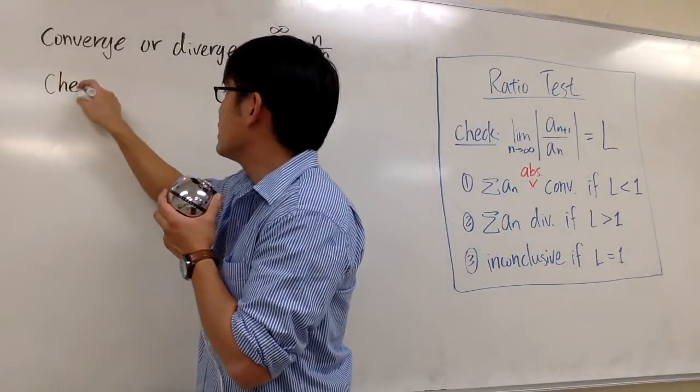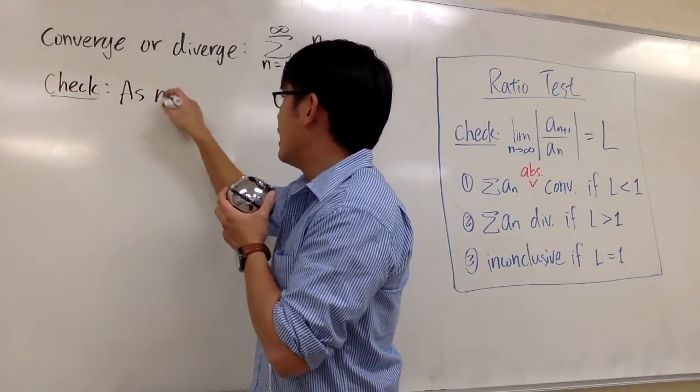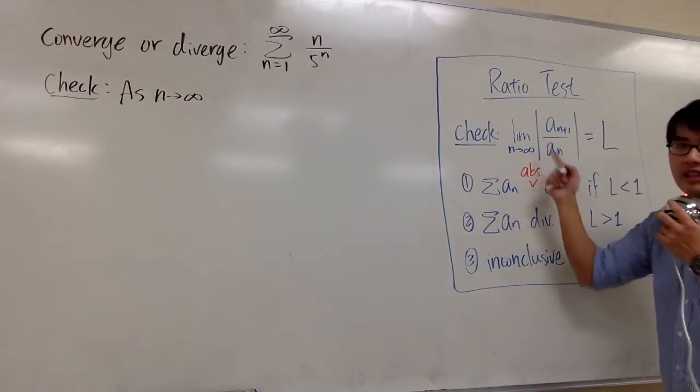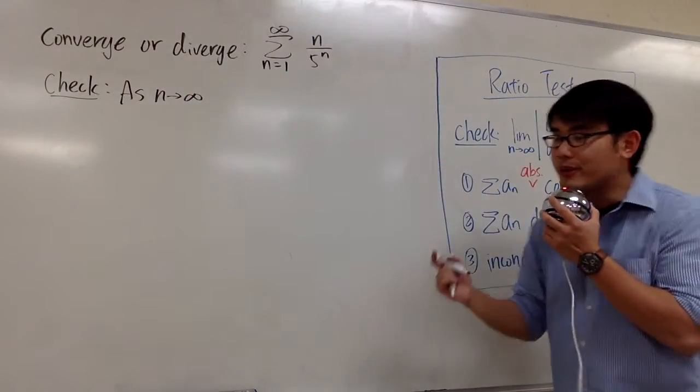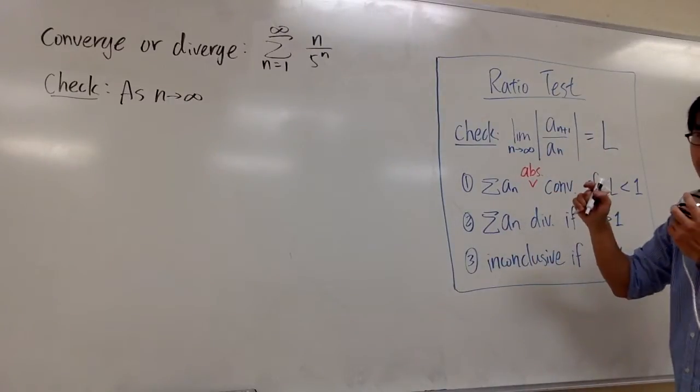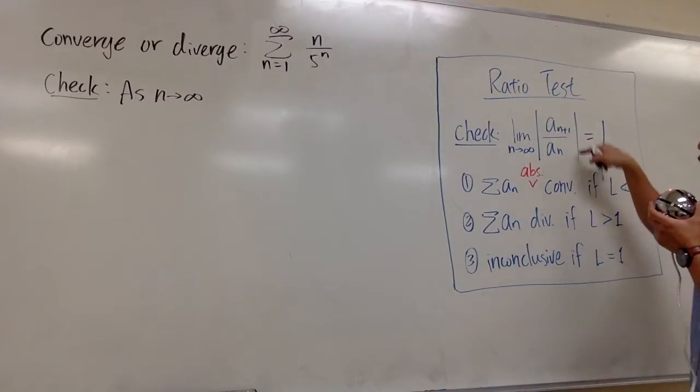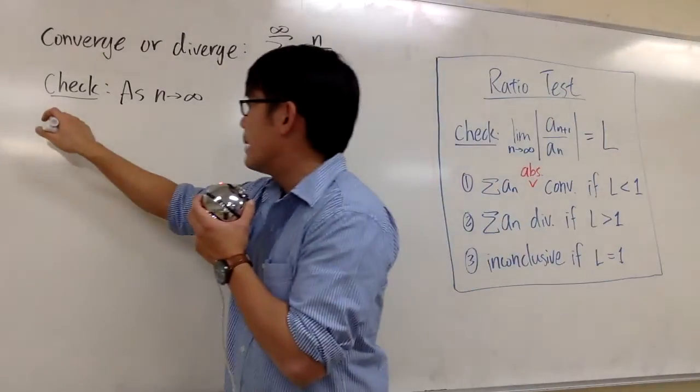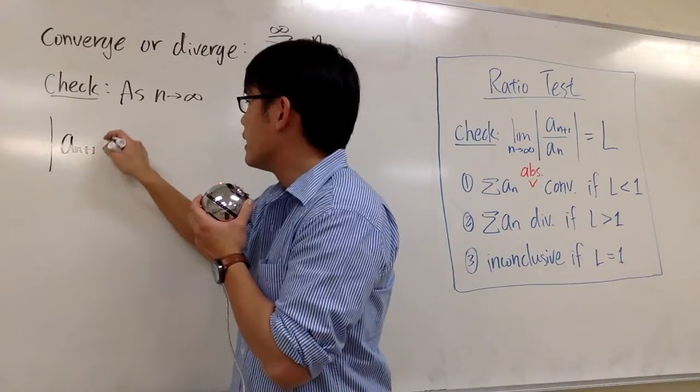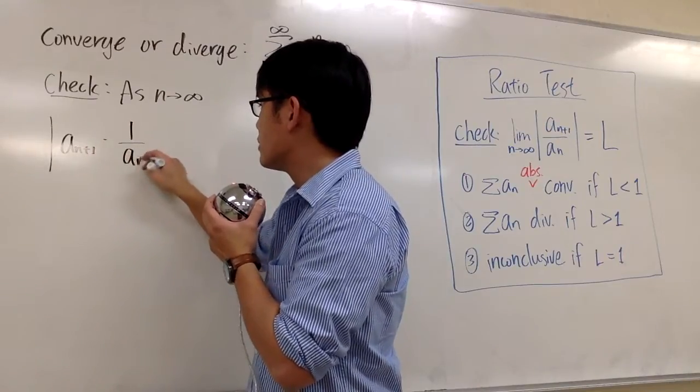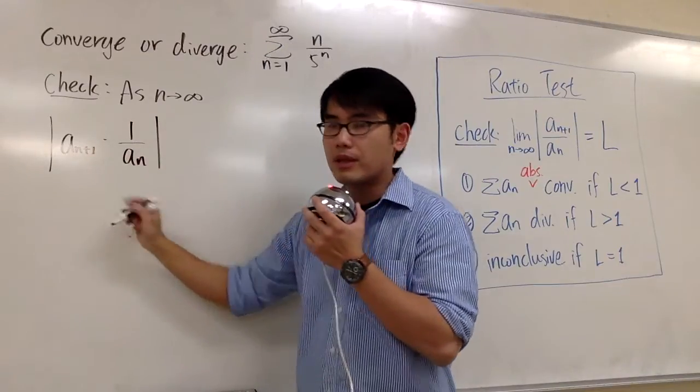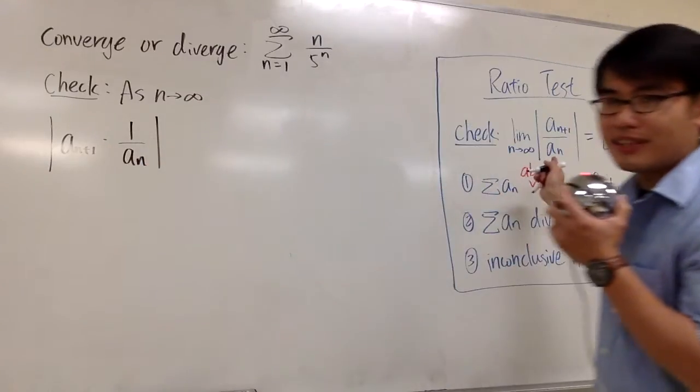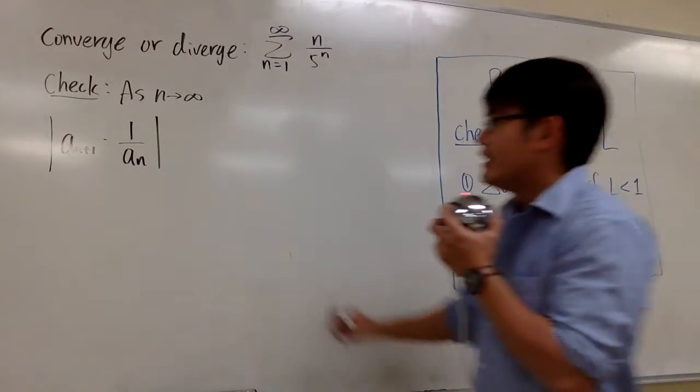So as n goes to infinity, I'm going to write down this expression in the following way. Instead of writing down absolute value of a n plus 1 over a n, let me write it as absolute value of a n plus 1 times the reciprocal of a n: a n plus 1 times 1 over a n. This is the same as that, isn't it?